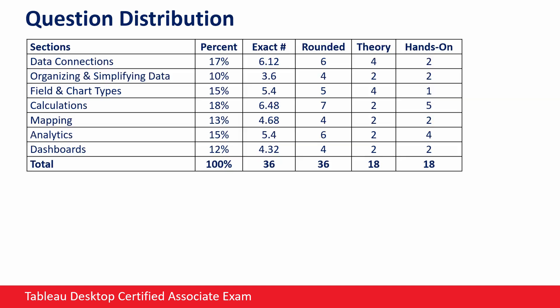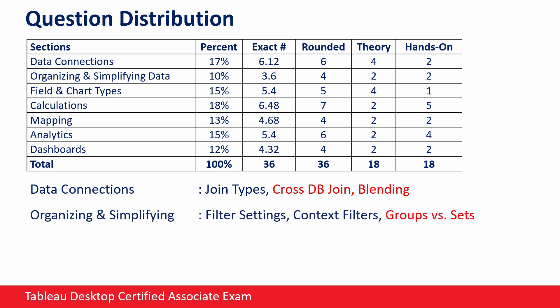Now let's talk about the question distribution. You can see the list of topics and their percentages in the exam guide document — these numbers are approximate but useful. Please remember that all topics are important, but I want to emphasize certain ones. Let's begin with data connections. The data connection section is extremely important because you can't solve a question if you can't make the correct connection settings. You have to know all the connection options by heart. I can guarantee you will have at least one question about blending or cross-database join. For organizing and simplifying data, you have to know filter settings, context filters, and the differences between groups and sets — these topics are a must.